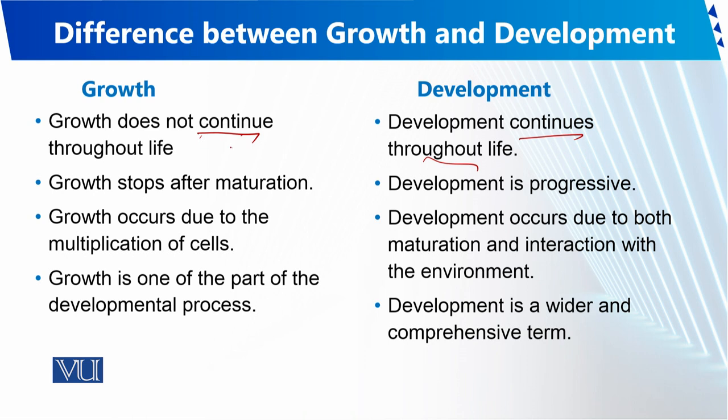Growth ایک خاص عمر کے حصے میں جا کے بند ہو جاتا ہے — جیسے 25 سال کے بعد decline شروع ہو جاتا ہے اور human body کی growth مکمل ہو جاتی ہے۔ لیکن development کا process ساری زندگی جاری رہتا ہے۔ Growth stops after maturation — maturation level مختلف لوگوں کے لیے مختلف ہوتا ہے، یہ varies according to the individual.